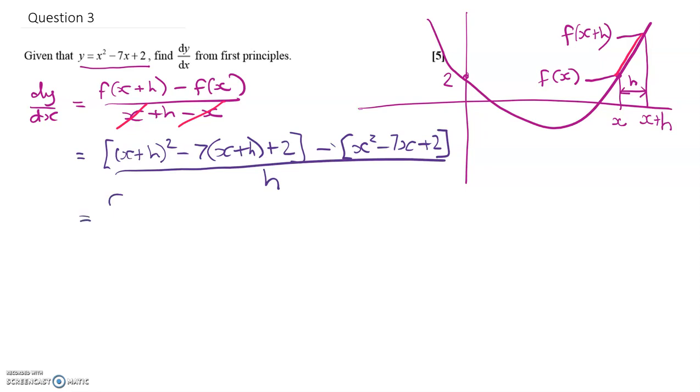Okay, let's multiply out the top, because at this stage you normally see things that you can cancel out. And then we've got minus x squared minus 7x plus 2 there, all over h.